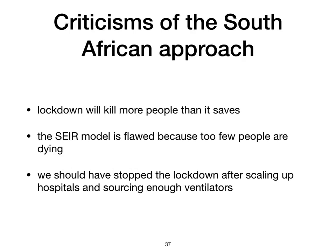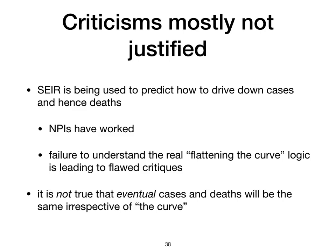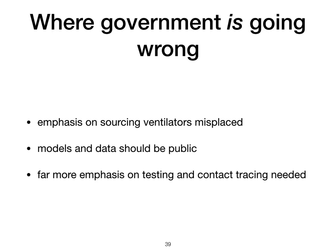Let's go on to some criticisms of the approach. The first is the claim that the lockdown will kill more people than it saves. The other is that the SEIR modeling is flawed because too few people are dying — if the models were correct, a lot more should be dying — and that we should have stopped the lockdown after scaling up hospitals and sourcing ventilators. The SEIR model is being used to predict how to drive down cases and hence deaths, and the NPI strategies advocated based on those models have worked. The other issue is failing to understand the real logic of flattening the curve, which leads to flawed critiques. It is not true that eventual cases and deaths will be the same irrespective of the curve, as we saw with previous simulations.